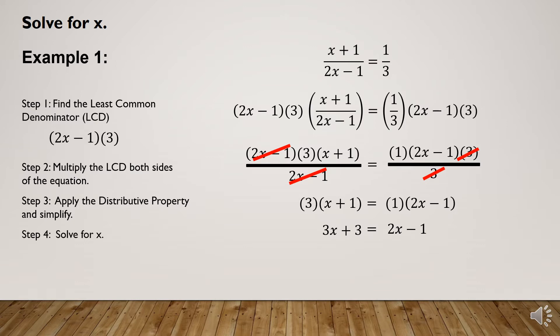We will now solve for x by combining like terms. We transpose 2x to the other side using its additive inverse, giving us 3x - 2x on the left. Then we add the additive inverse of positive 3, which is negative 3, to both sides, so we get negative 3 minus 1 on the right.